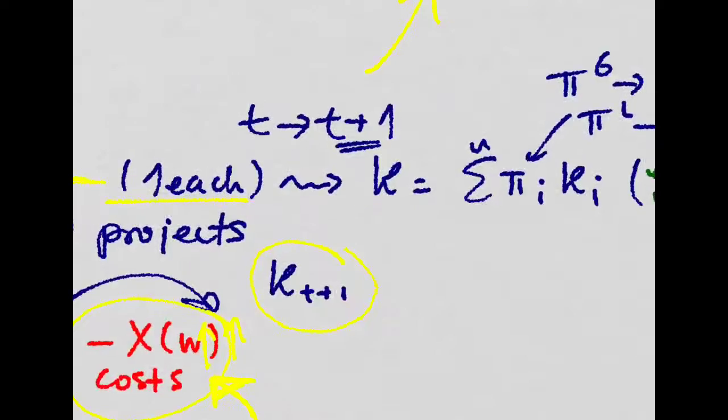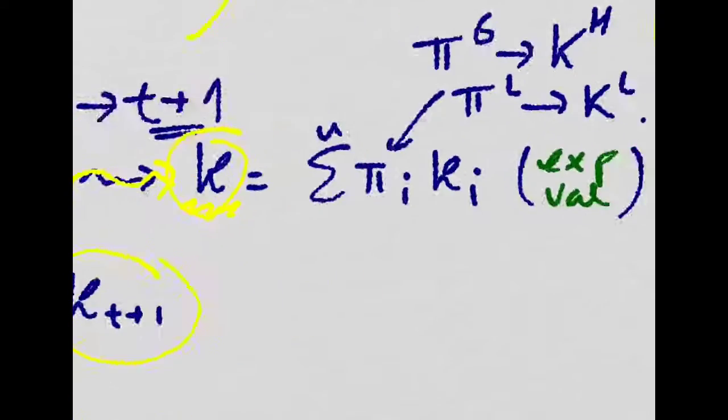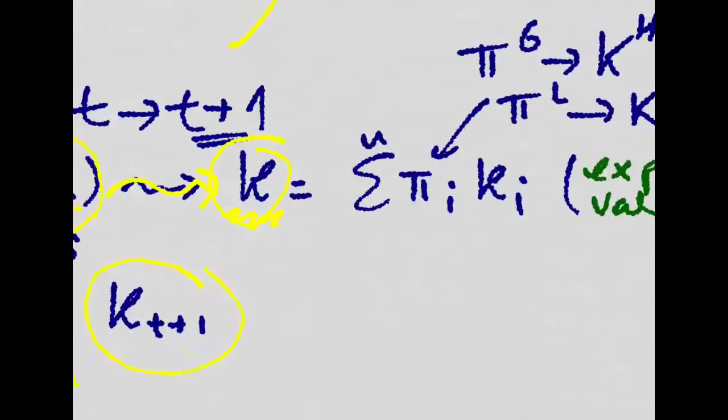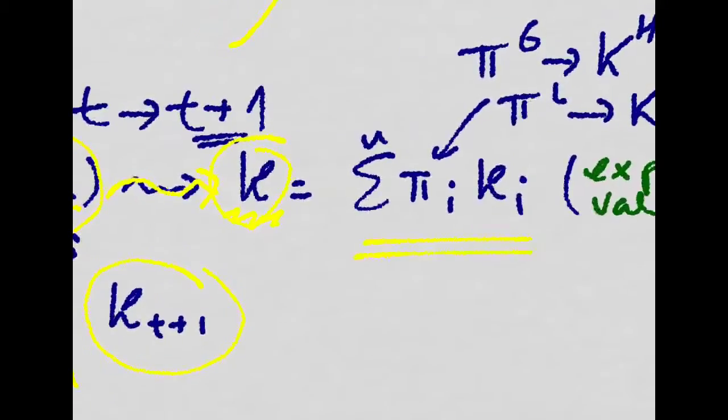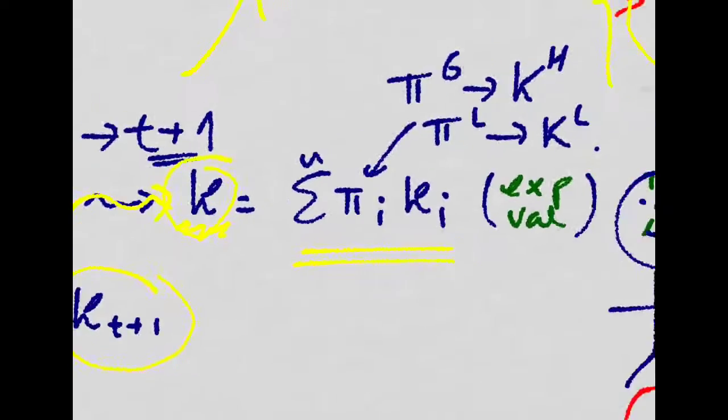Now, each one of them is going to invest in one project, and this project has a certain expected production in the next period. So, when you're sitting from T to T plus one, and you're looking at the different states of the world in the next period, you're going to realize that things can go well, and you can get a really high capital in the next period, or things can go really bad, and you can get a really low capital in the next period.